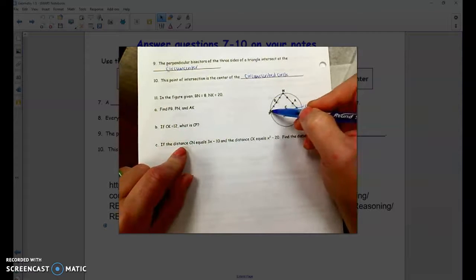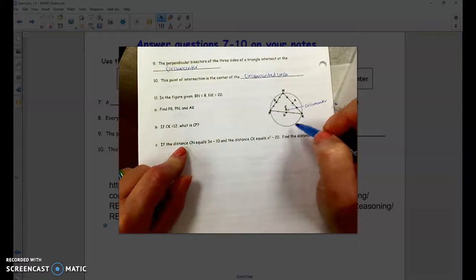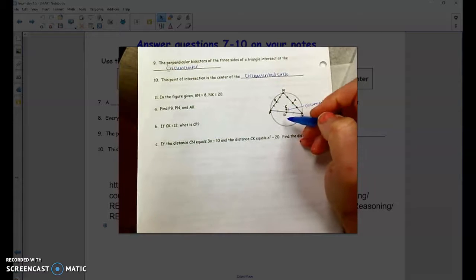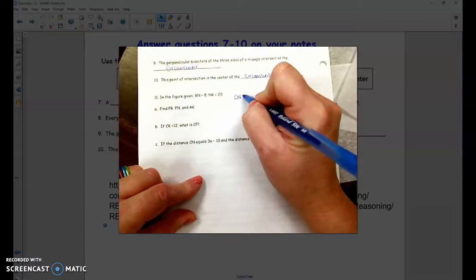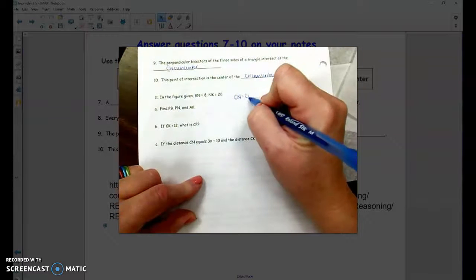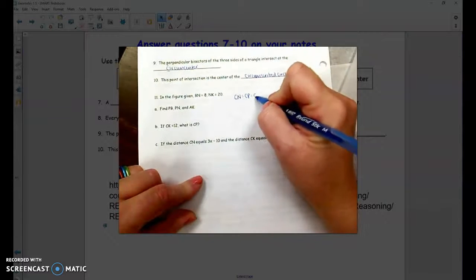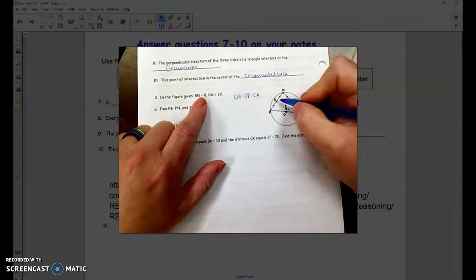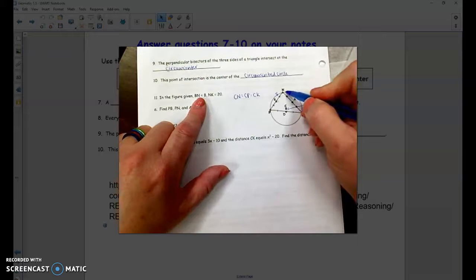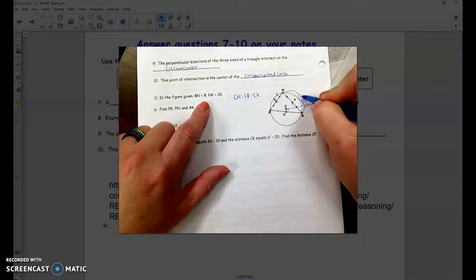So C to N, C to P, and C to K are all radii of that circle, which tells me those are all the same distances, all the same lengths. So C to N, C to P, and C to K are all equal lengths, all equal distances. So we are given B to N as 8, and N to K, which is this whole distance right here, as 20.